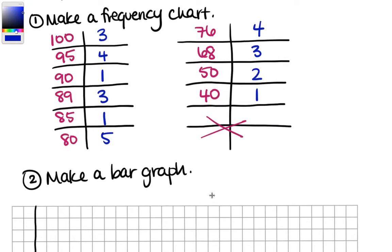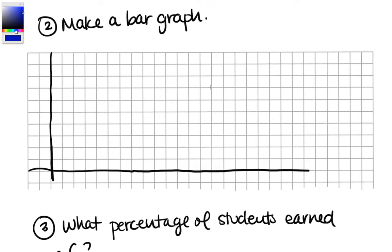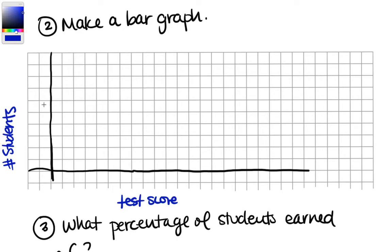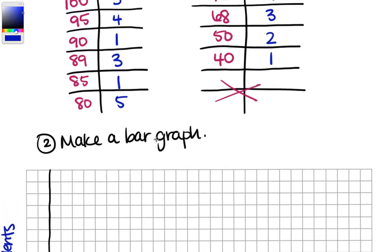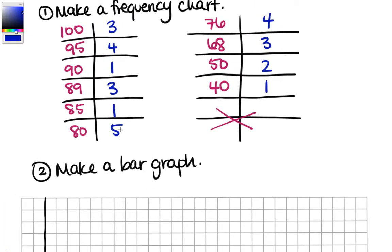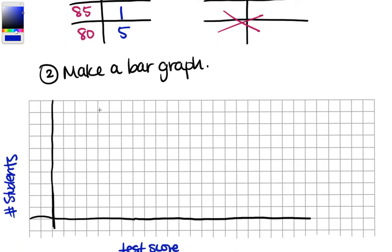Now what we want to do is use that frequency chart to make a bar graph. Every test score is going to be represented by a bar, and the height of that bar is going to represent how many students scored that test score. Here we've got the number of students on the left and the test scores along the bottom. The most any score appears is five, so let's have every row represent one, going all the way up to five.